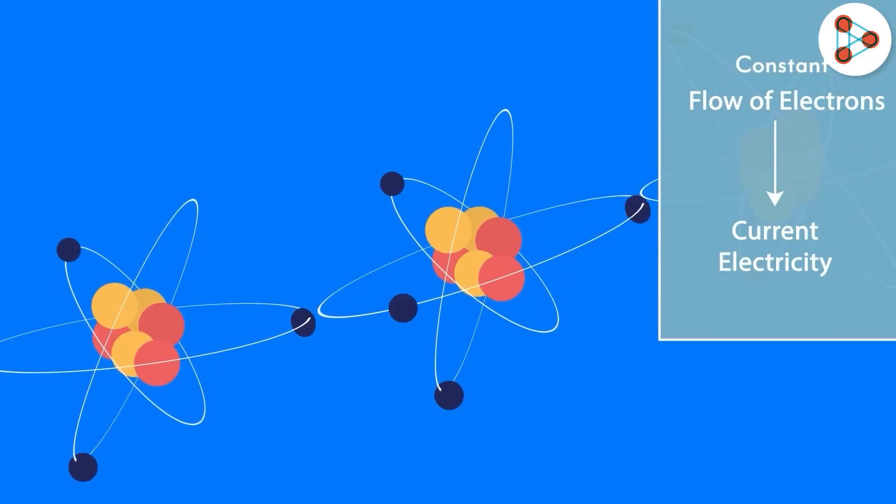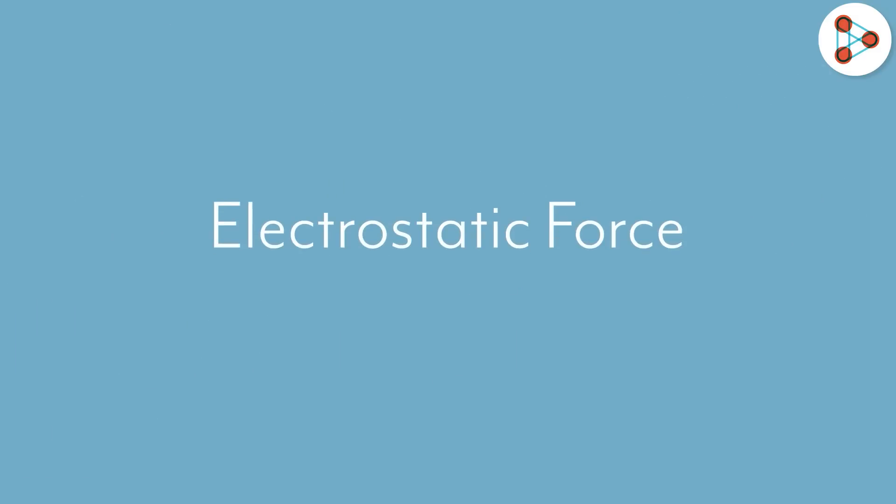But why do charges flow? Why does the electron from one atom move to the orbit of another? To understand that, we need to understand the concept of electrostatic force. In simple words, it is the force that operates between charges, and most of us already know it. Opposites attract, and likes repel.